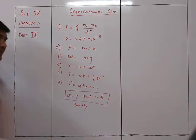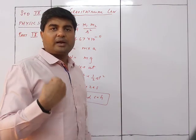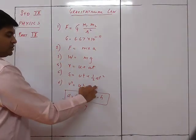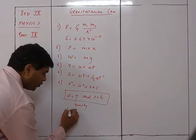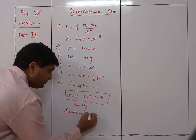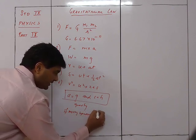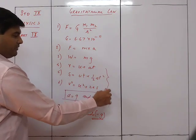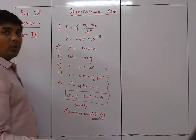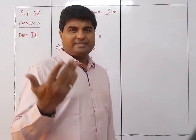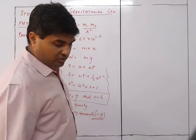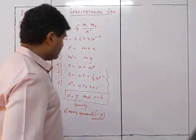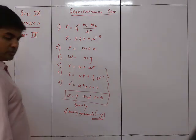When a body is moving in connection with gravity — thrown vertically upwards or falling down — take a = g and s = h. If the body is thrown vertically upwards, g is negative, because it is moving against the gravity. These are the basic formulas we will be using.